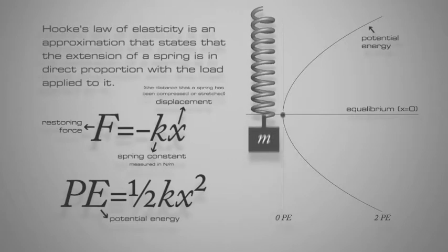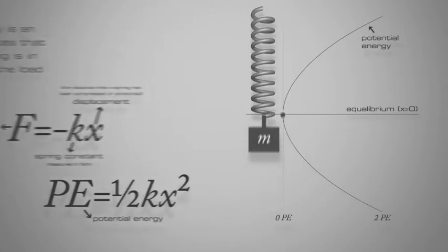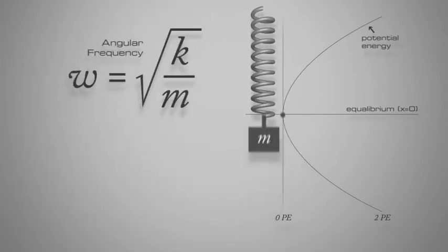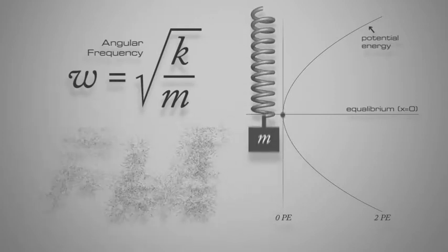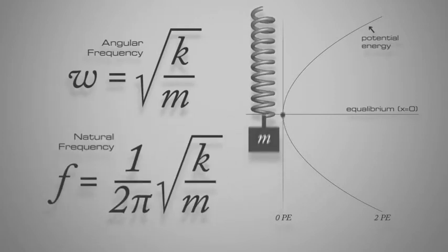If a mass m is attached to the end of such a spring, the system becomes a harmonic oscillator. It will oscillate with a natural frequency, given either as an angular frequency, w equals the square root of k over m, or as a natural frequency, f equals one over two pi times the square root of k over m.